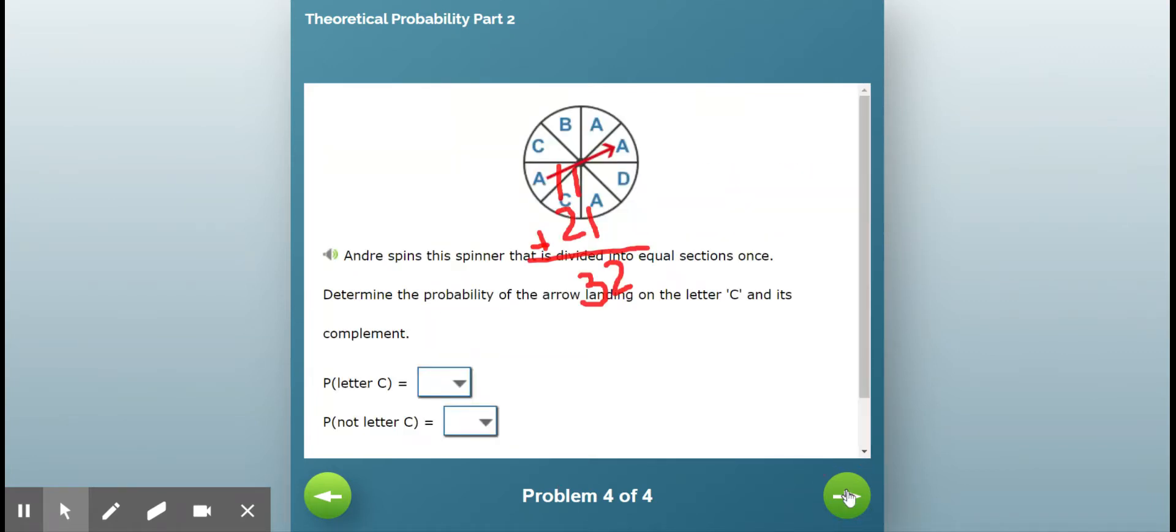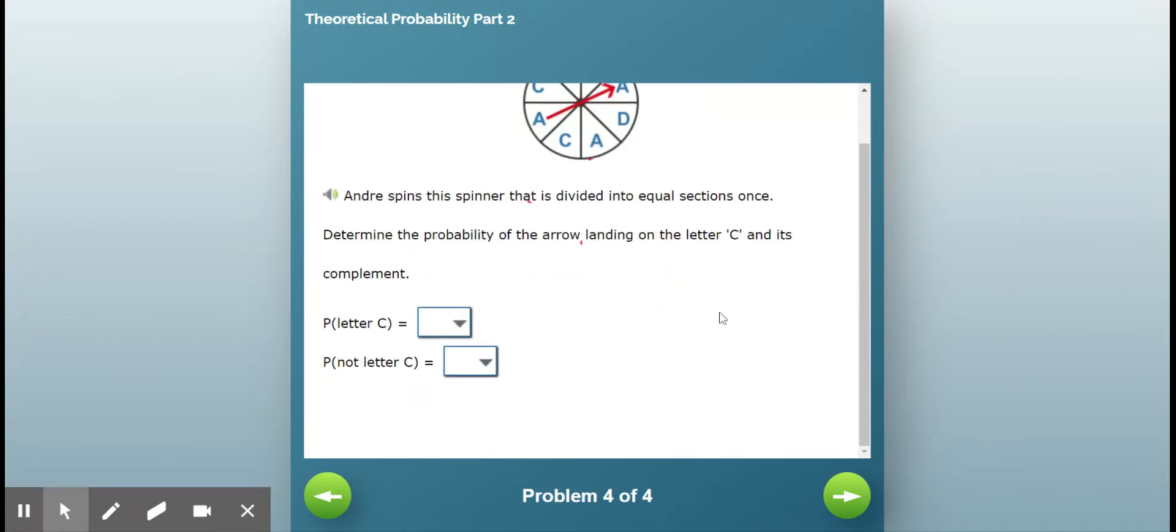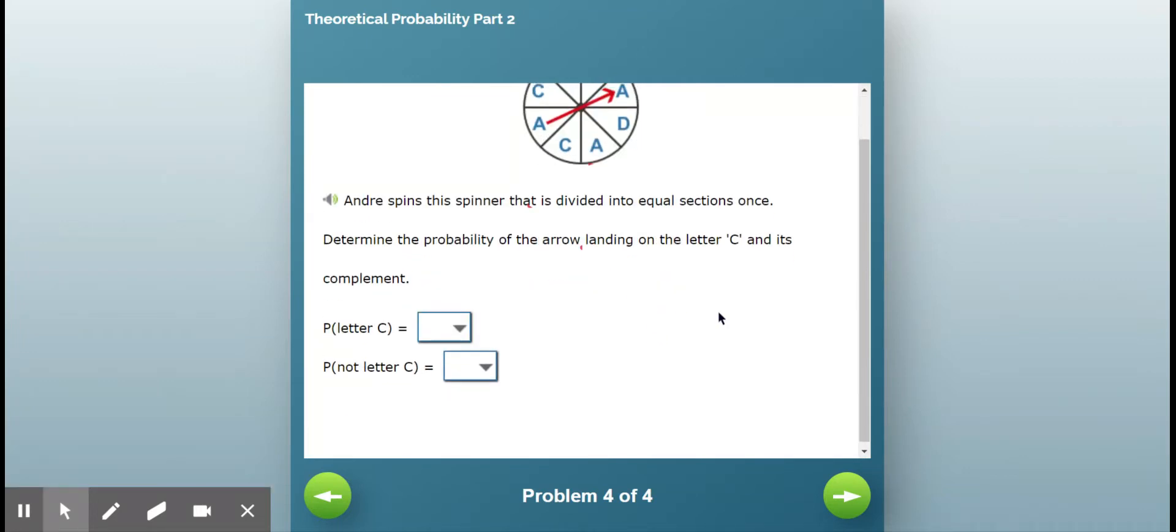Now let's look at the next one. Here we go. So I want the probability that it will land on the letter C and its complement.